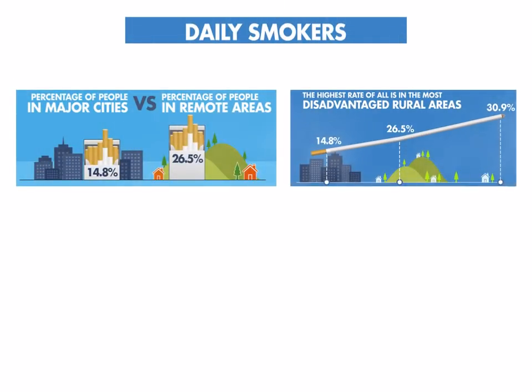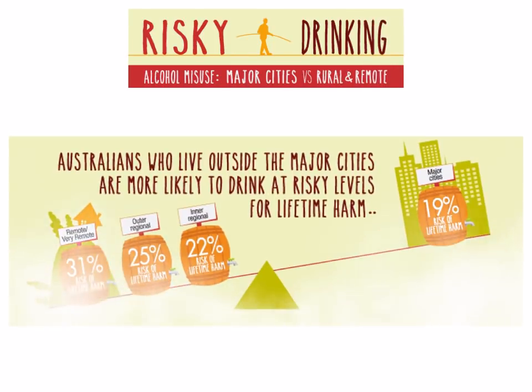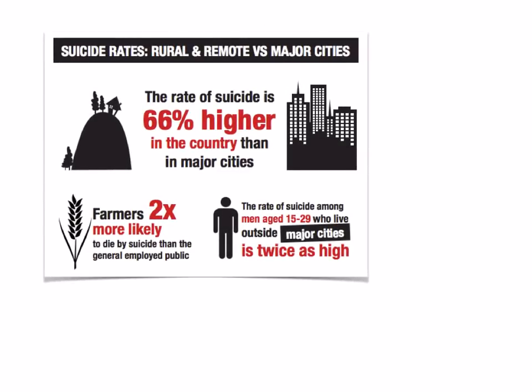The daily smoking comparison is quite significant — up to 26% in rural and remote areas are daily smokers compared with around 15% in major cities, with major implications for cardiovascular disease and cancer. Risky drinking is also an issue, with up to 31% in very remote areas drinking at risky levels compared to 19% in major cities. There is also a much higher suicide rate for those in rural and remote areas.